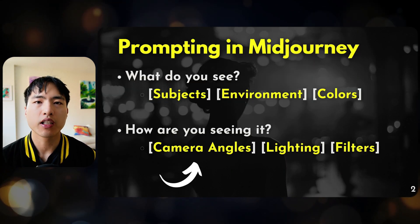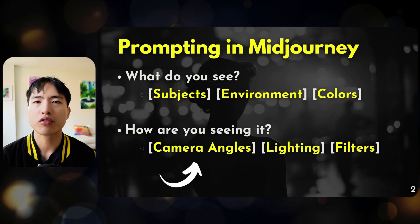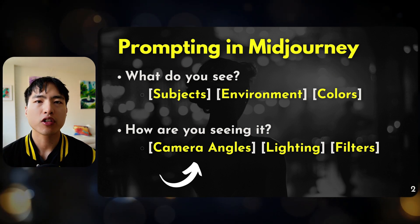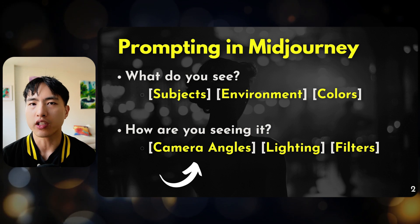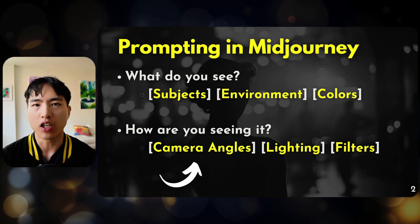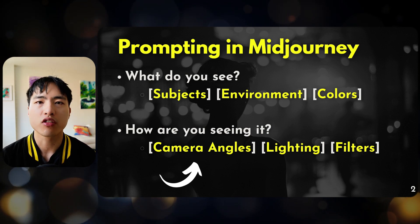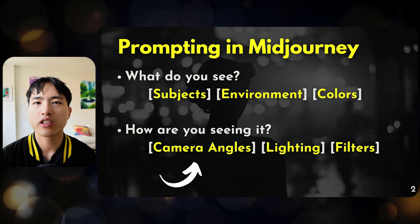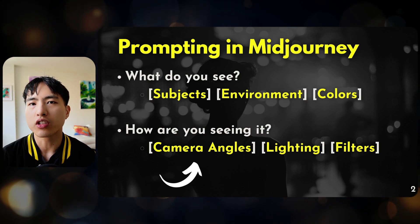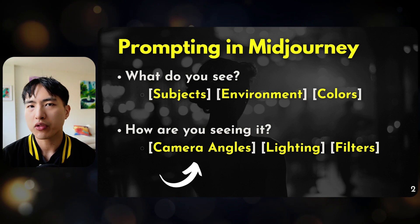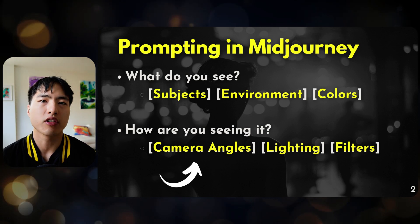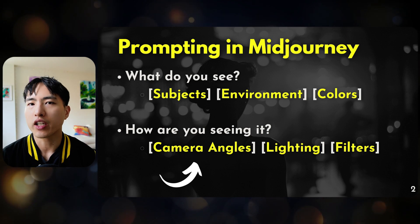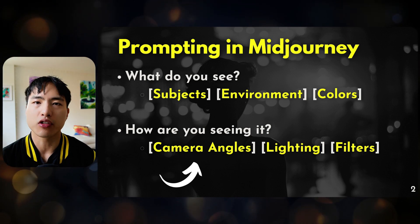When it comes to prompting in Midjourney, there are two main questions you have to ask yourself. The first question is what are you seeing — the subject, the environment, the colors, the shapes, the big general ideas. The second question is how are you seeing it? This can come down to the camera angles, which we'll cover today, or it can come down to the lighting or any filters you have on your image.